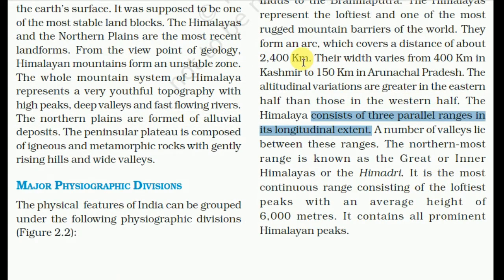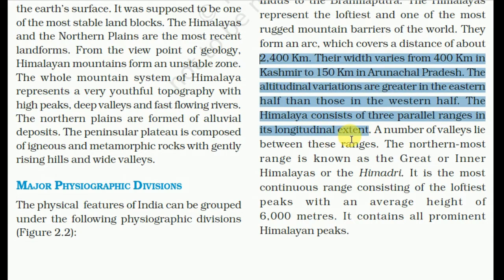To note the key points: the distance of the Himalayas is about 2,400 km; the width in Kashmir is about 400 km and in Arunachal Pradesh is about 150 km. The altitudinal variation is greater in the eastern half — that is in Arunachal Pradesh, Assam, etc. The Himalayan mountains consist of three parallel ranges in their longitudinal extent.